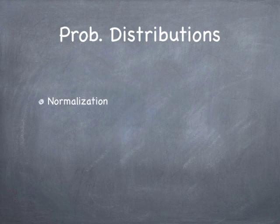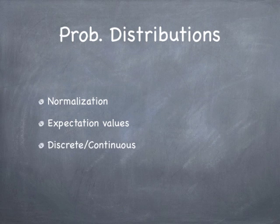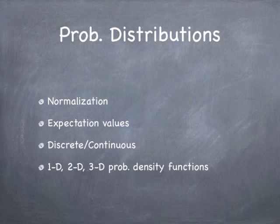The idea of probability distribution: the notion of normalization, the idea that the total probability of being anything has to be one no matter what the state is, the idea of expectation values — you need to be able to compute various expectation values: position, momentum, energy, angular momentum, and so on. The different kinds of probability distributions we have, discrete and continuous, and probability distributions that extend into more than one dimension — one, two, and three-dimensional probability density functions.